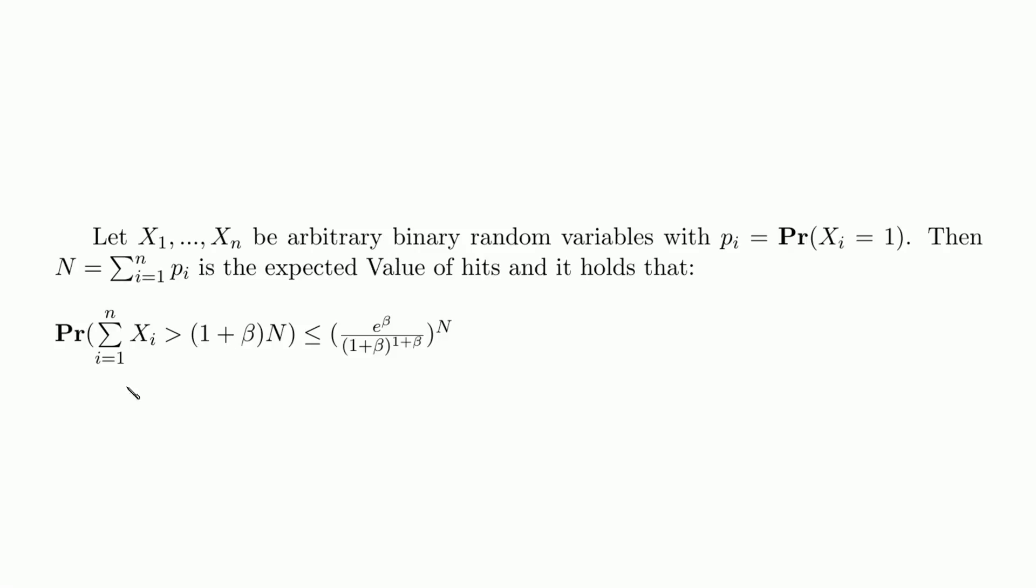Now the following inequality holds. The probability that a random experiment strays from the expected value by more than a factor of 1 plus beta is less or equal to the term on the right side.